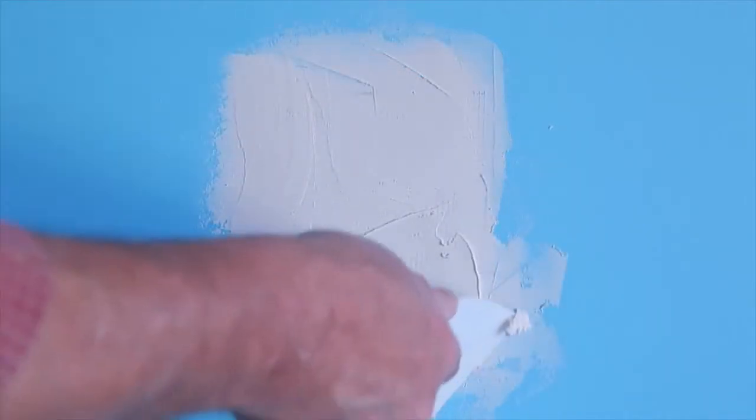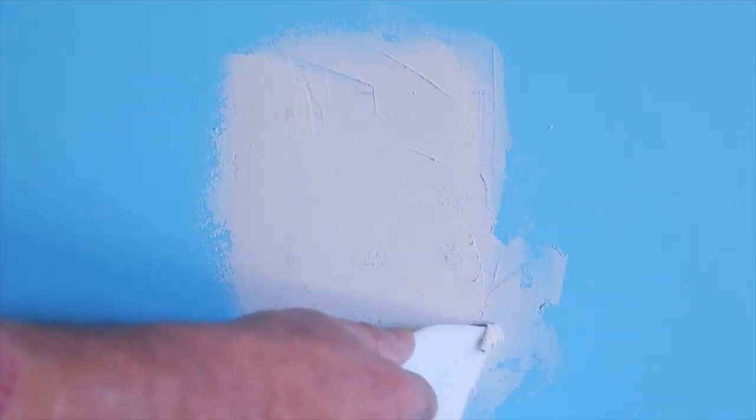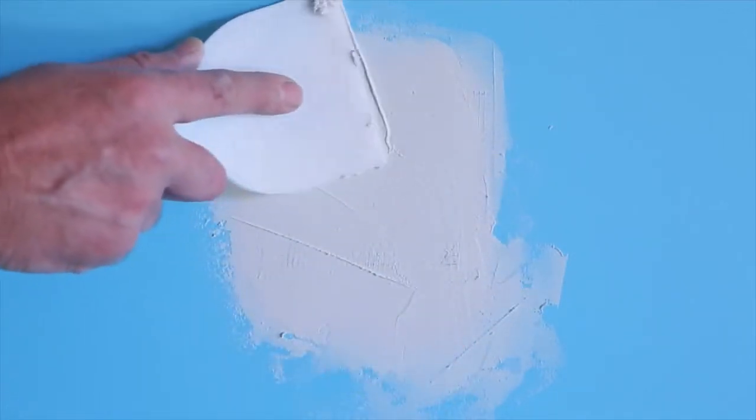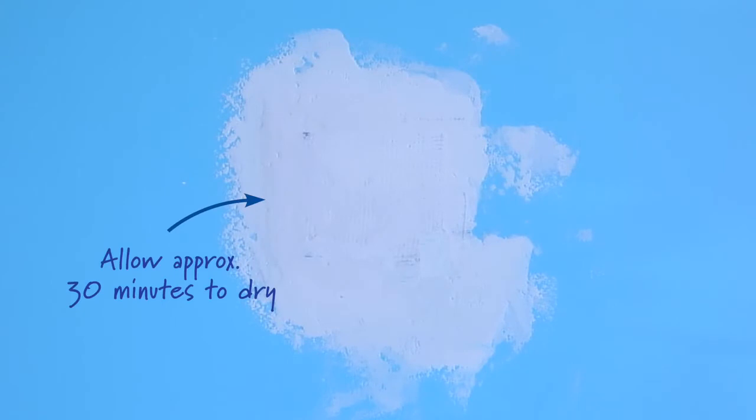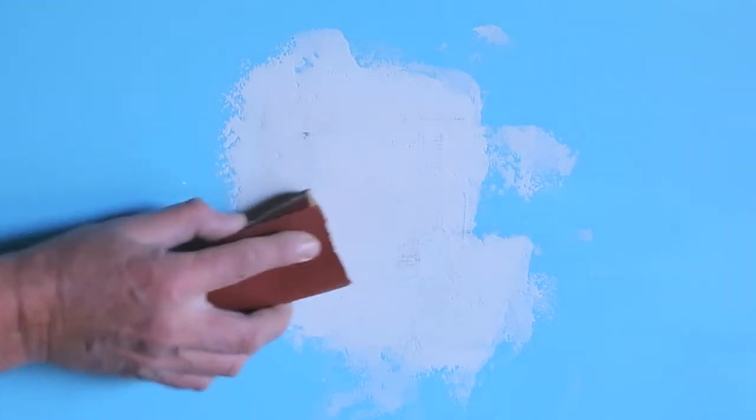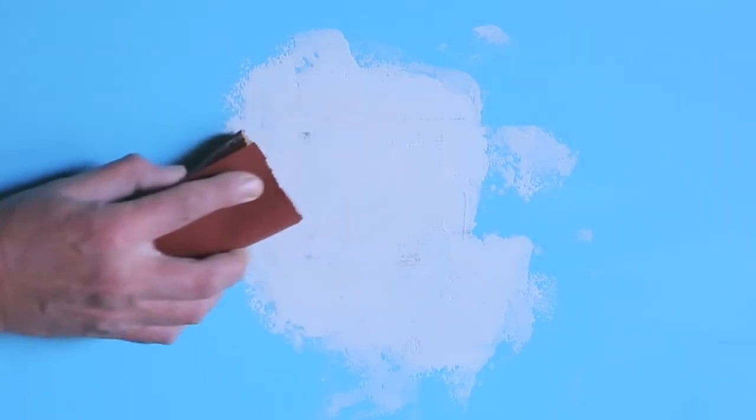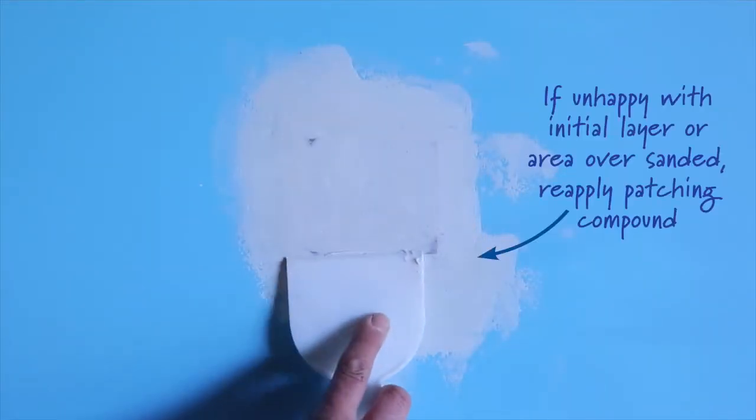Remember to smooth the patching compound as you go. The smoother it is applied, the less sanding is required. Once the patching compound has dried (you'll know by touching the applied area, approximately 30 minutes), sand down the surface until it's smooth and appears flat on the wall.